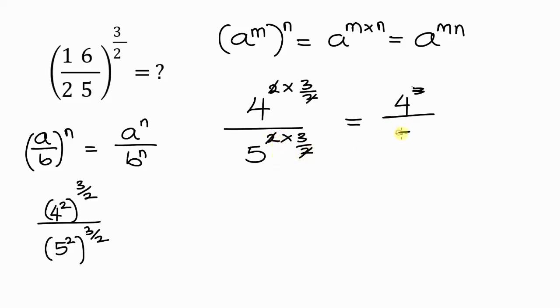4 to the power of 3 is equal to 64, while 5 to the power of 3 is 125. So 64 all over 125 is the answer to 16 all over 25 all raised to the power of 3 over 2.